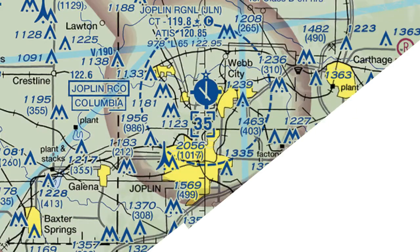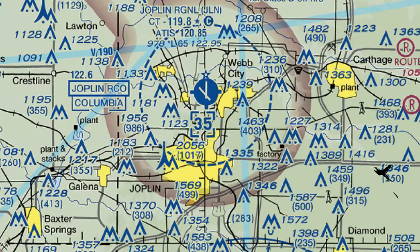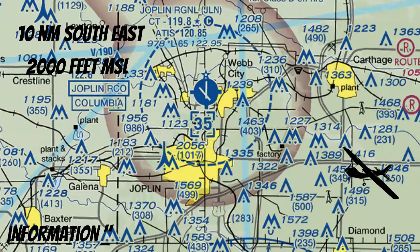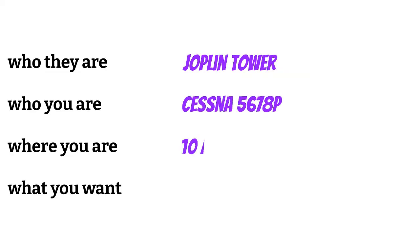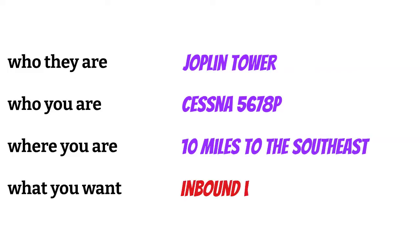Let's call up Joplin Regional — they look like a nice place to stop for fuel. Before I call them up, I'll make a quick mental note of exactly where I am. Then I'll grab the ATIS. "Joplin Tower, Cessna 5678 Papa, 10 miles to the southeast, inbound with Yankee." Sometimes it can be beneficial to let ATC pick the runway for you, which is why I just told them I'm inbound.